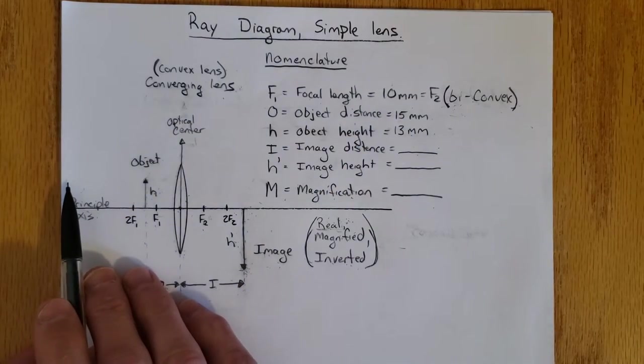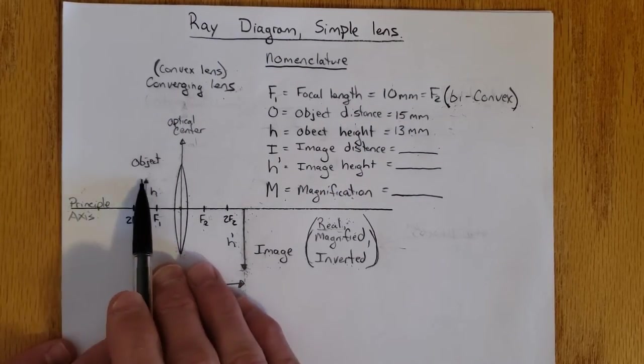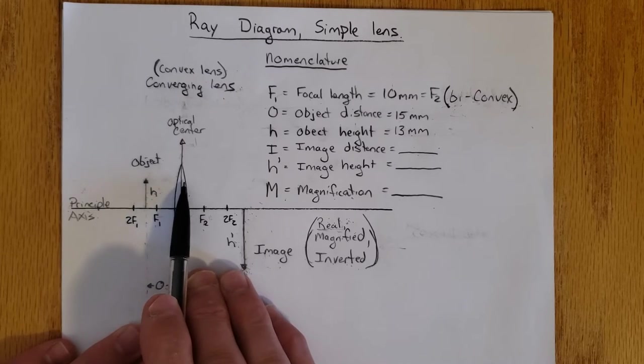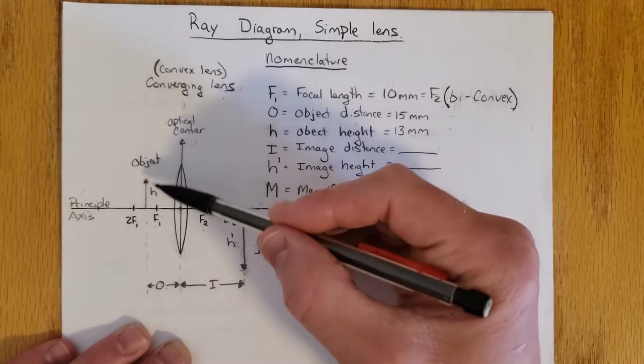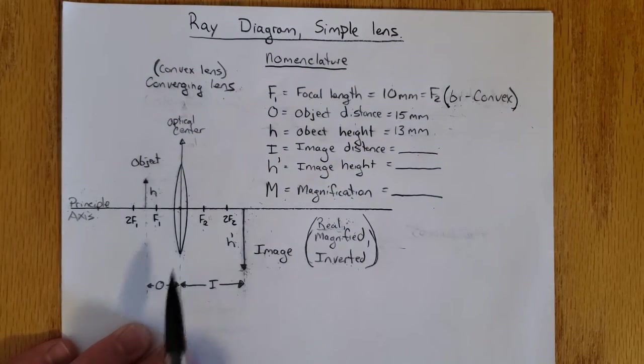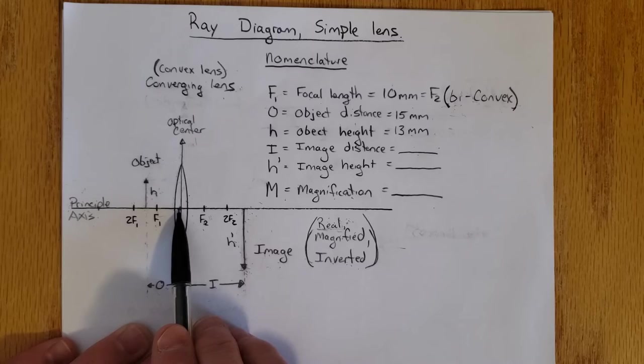We're going to assume that light is passing from left to right through an object and then creating an image on the back side of the lens. The object has a height h and it is a distance o from the optical center of our lens.